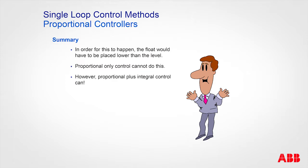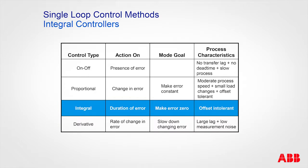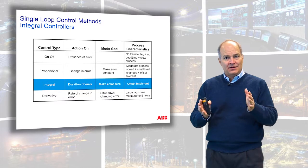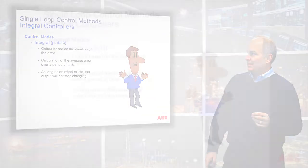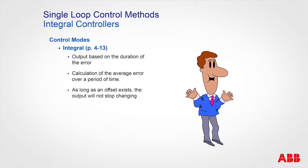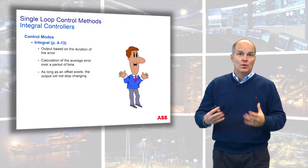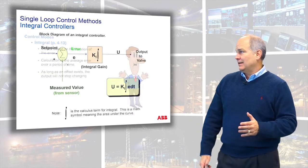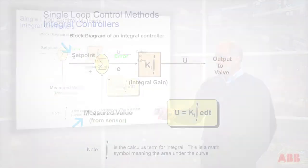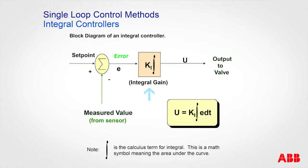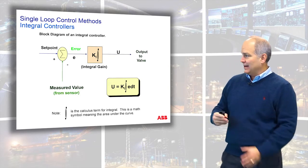On-off works on the presence of error; proportional works on the change in error but results in offset. Integral is next — it deals with the duration of the error and its goal is to make the error zero. The output is based on the duration of the error: it calculates the average error over a period of time. As long as an offset exists, the output will not stop changing. Another term for integral is reset. In a block diagram, the integral term calculates the area under the error curve over time, and the gain is simply a multiplier adjusting the slope.